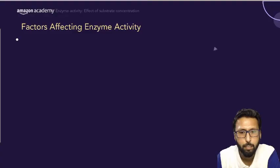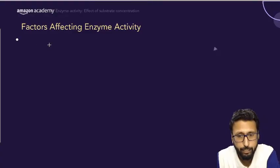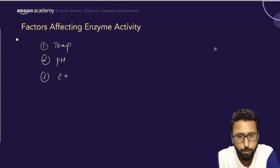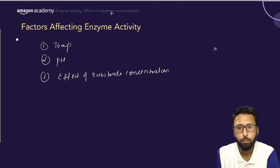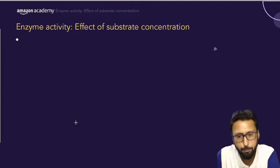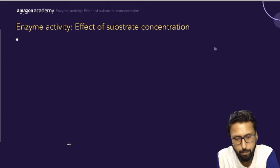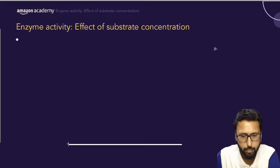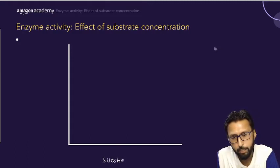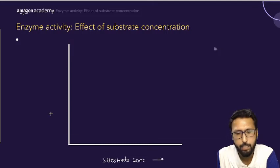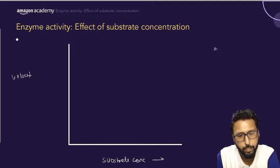We can divide this reaction into three phases to understand how substrate concentration affects the rate of reaction. We have already discussed temperature and pH as factors affecting enzyme activity. The third factor is the effect of substrate concentration. To understand this, we will use a graph where the x-axis is substrate concentration and the y-axis is velocity of the reaction.